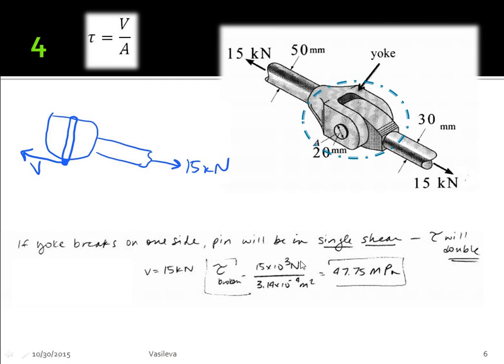And because 15 kilonewtons is our V, we plug it straight into our equation. The area remains the same. So if we have a bigger V compared to the one we had before, our shear stress actually doubles and becomes bigger.